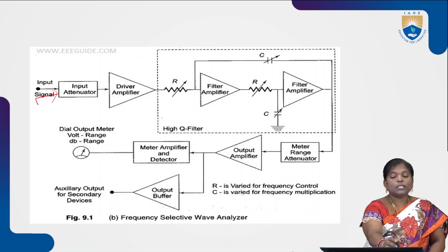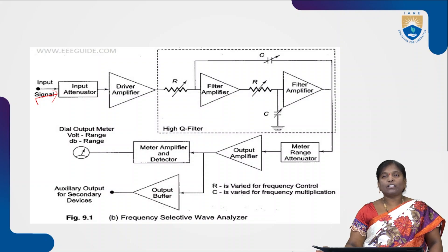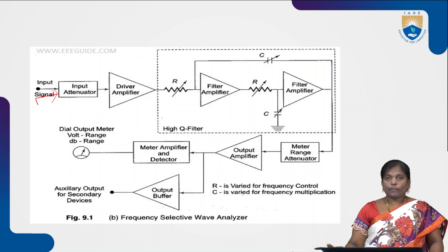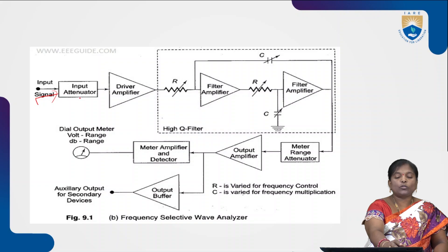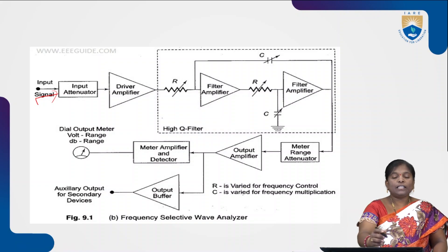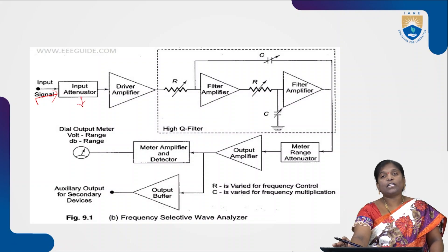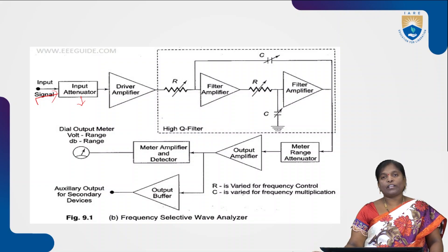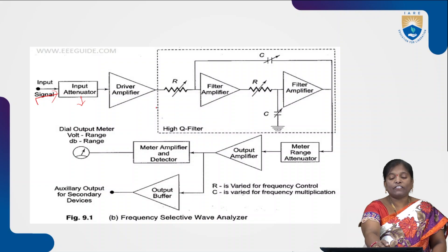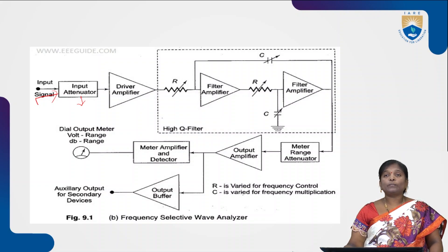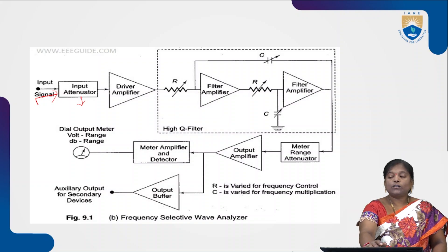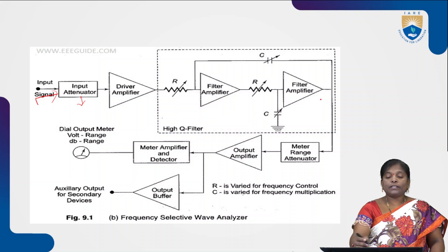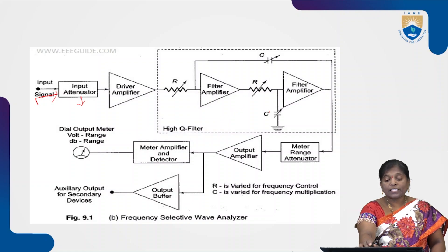The input signal passes through the attenuator section. We are using a narrow band-pass filter, which allows only a particular input signal frequency through and rejects all other frequencies. The attenuator attenuates unwanted signals so only the required amount passes to the driver amplifier. The driver amplifier then feeds the output to the high-Q filter, which contains two cascaded RC networks. By varying the capacitance value, a particular band of frequencies is allowed through this high-Q filter.